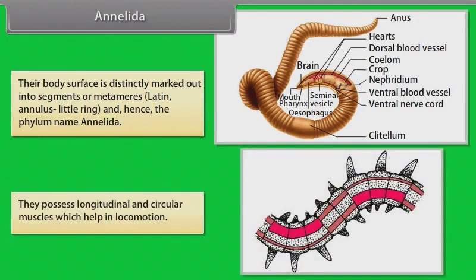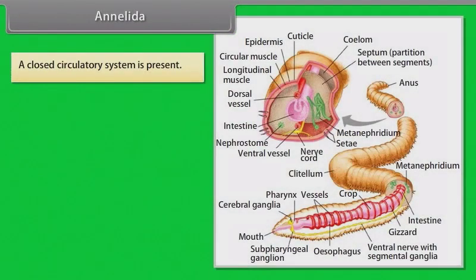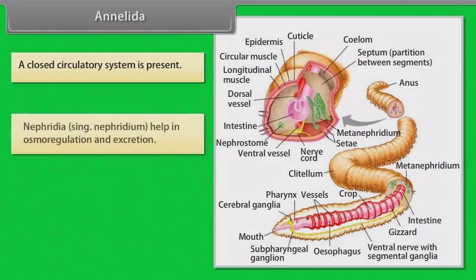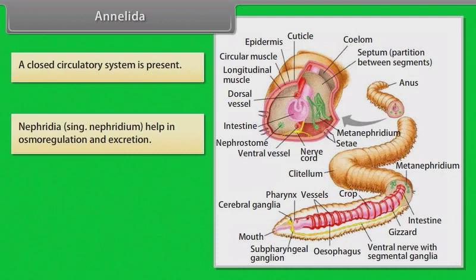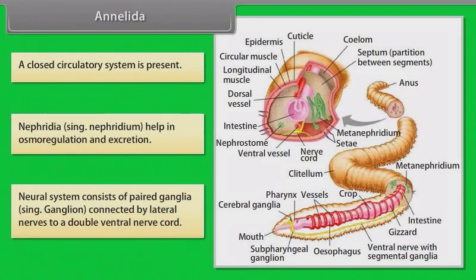They possess longitudinal and circular muscles which help in locomotion. A closed circulatory system is present. Nephridia (singular: nephridium) help in osmoregulation and excretion. The neural system consists of paired ganglia (singular: ganglion), connected by bilateral nerves to a double ventral nerve cord.